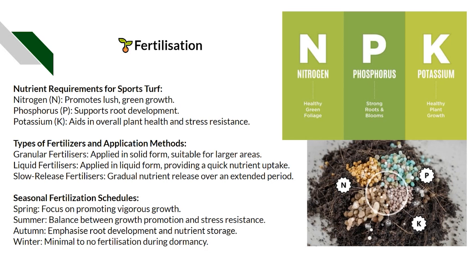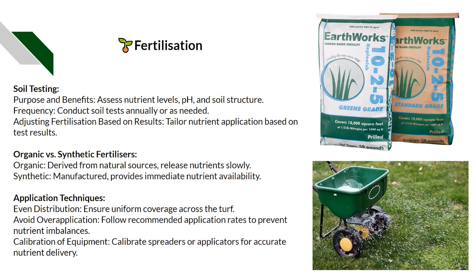Seasonal fertilization schedules: in spring, promote vigorous growth. In summer, balance growth and stress resistance. In autumn, focus on root development and nutrient storage for winter. In winter, minimal to no fertilization as the grass slows down dramatically — if you have the nutrient storage right, there's little to worry about. You might consider a slow-release fertilizer or liquid feed over winter to keep things topped up depending on your requirements.